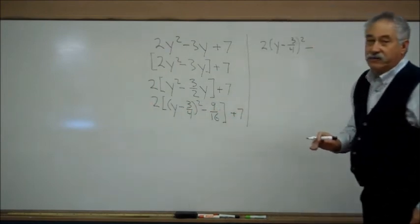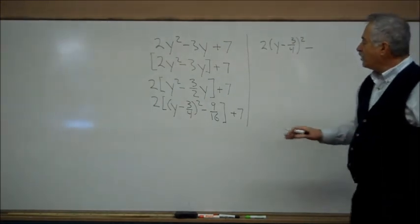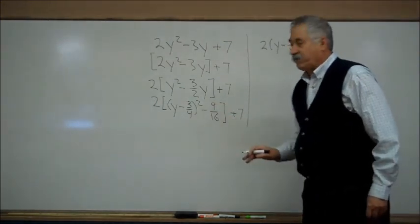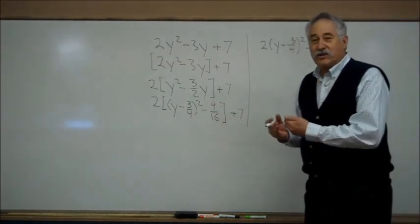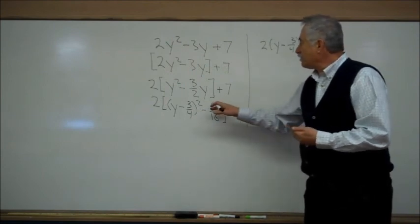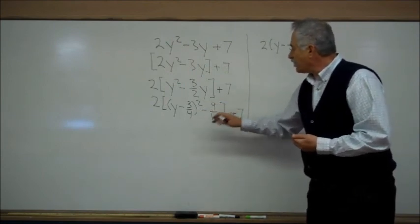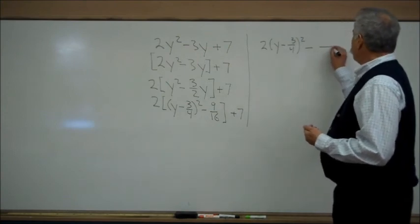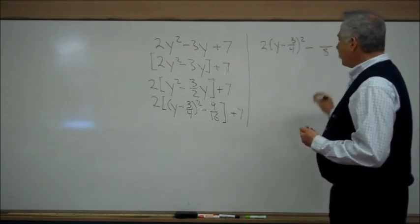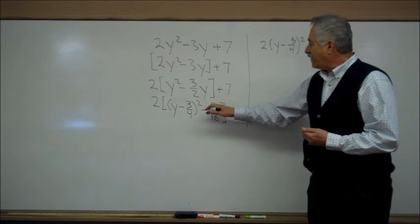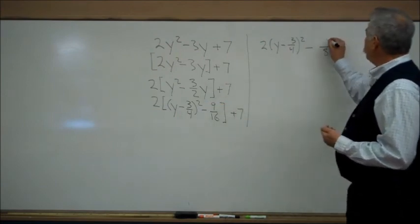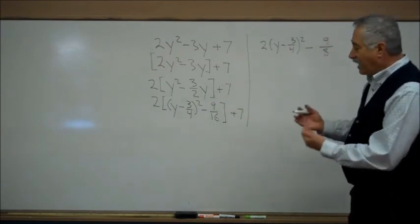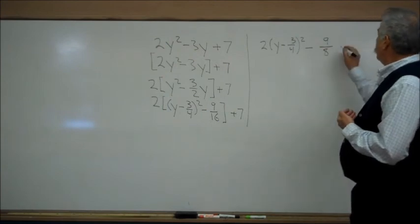You multiply by 2. 2 is in the numerator with the 9. If your arithmetic is good, you will see that you can reduce during the multiplication process. The 2 and the 16 will reduce to an 8 in the denominator. We have a 9 left in the numerator times the 1 that we had, 9 eighths, plus 7.